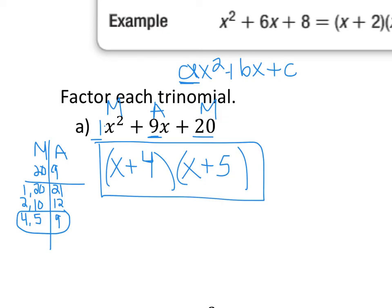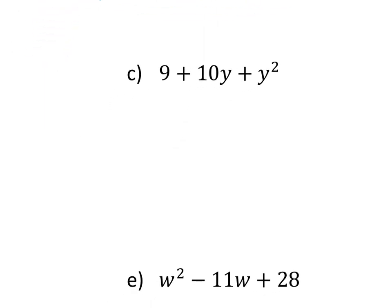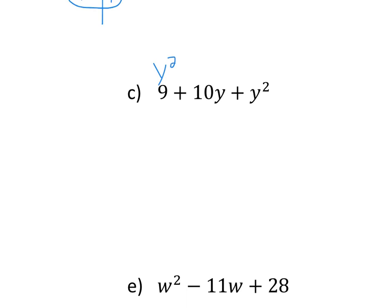Let's take a look at letter C. So here, in letter C, they are not in descending order. So I need to make sure I put them in descending order. So the y squared would be first, then the 10y, then the 9. Now that I'm in descending order, I can write my acronym of MAM. Again, remember the coefficient of y squared is 1. So I multiply my m's together. 1 times 9 is 9. And the a is 10.